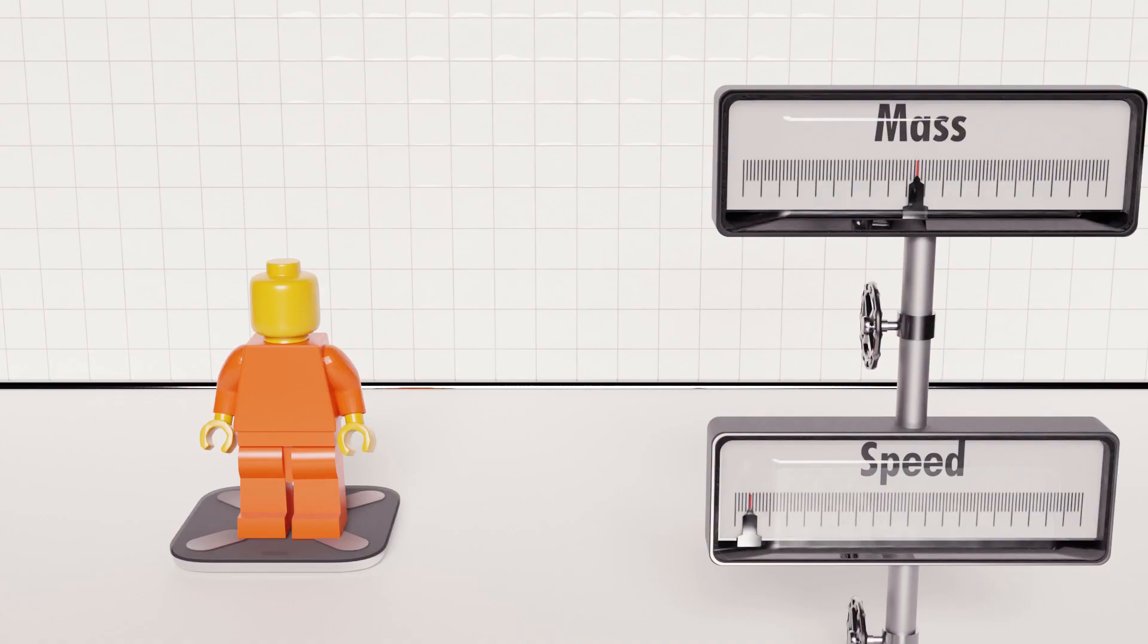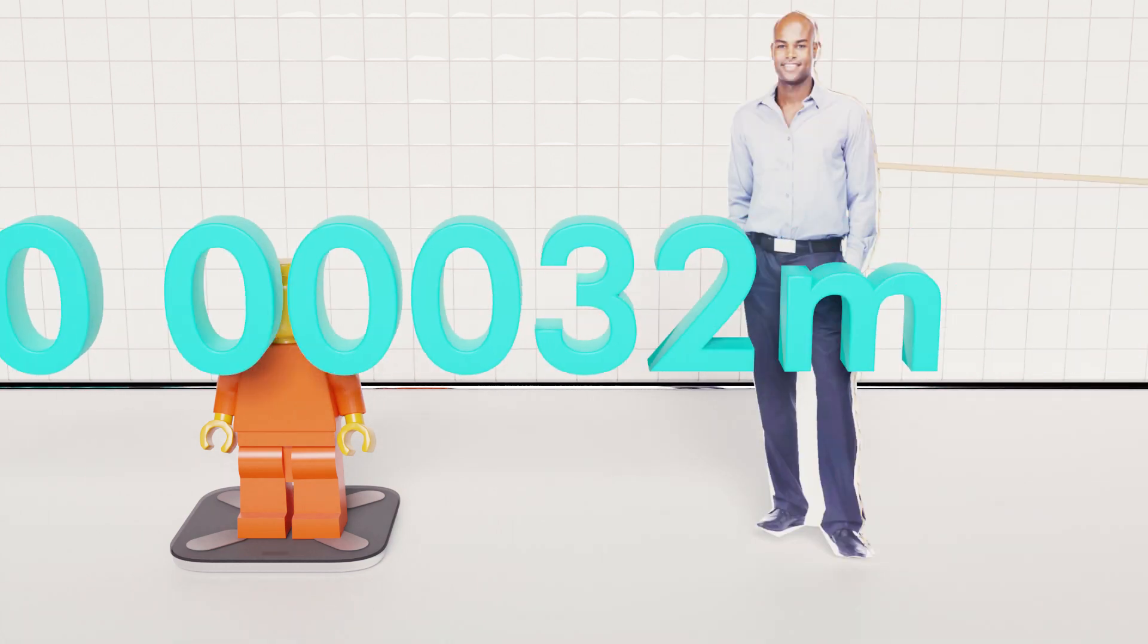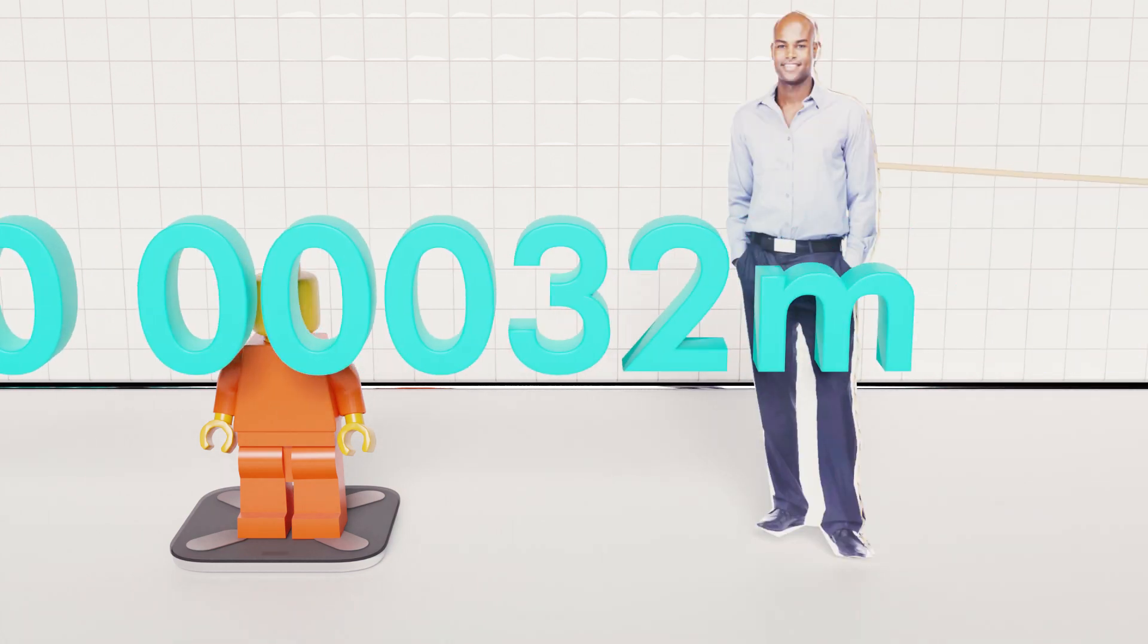While most everyday stuff does not move that fast, it does have a very short wavelength because it's comparatively massive on a quantum scale, which is why we don't notice the wave nature of everyday objects. The average adult human, for instance, has a wavelength of just 10 to the negative 32 meters, far too small to ever notice or detect.